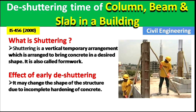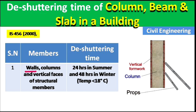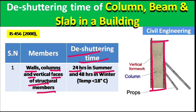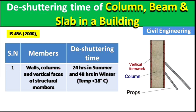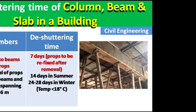Now, the de-shuttering times. I have categorized them into three categories: serial number, member, and de-shuttering time. For vertical members such as columns, the de-shuttering time is 24 hours in summer and 48 hours in winter. Winter is defined as a temperature less than 18 degrees Celsius. In summer, concrete hardens faster, so 24 hours is sufficient.